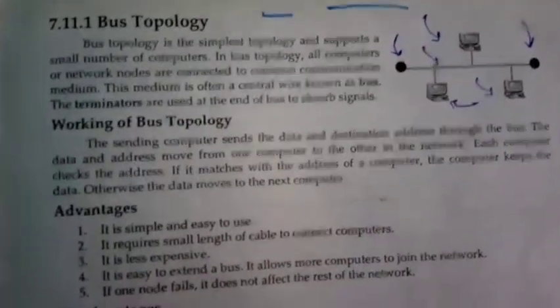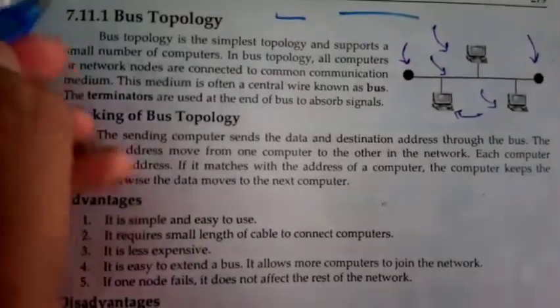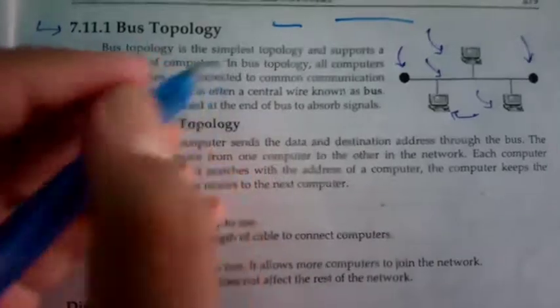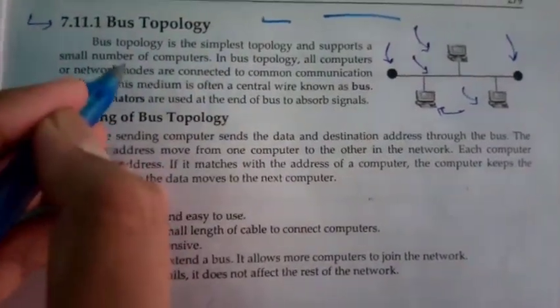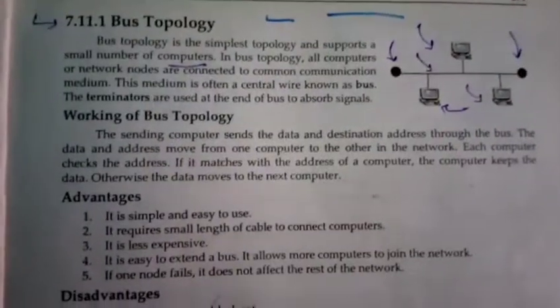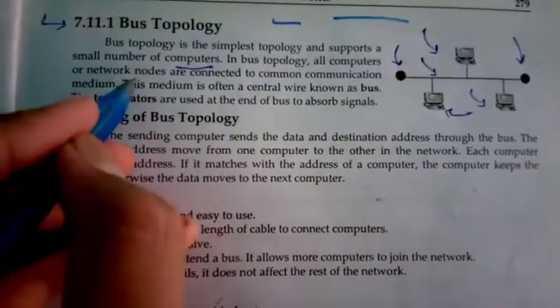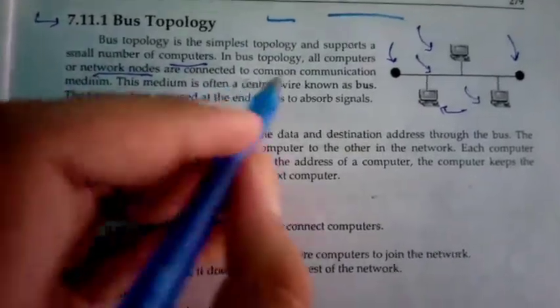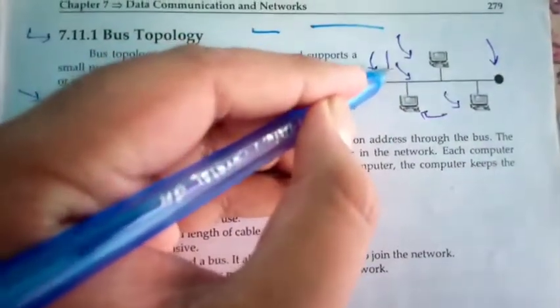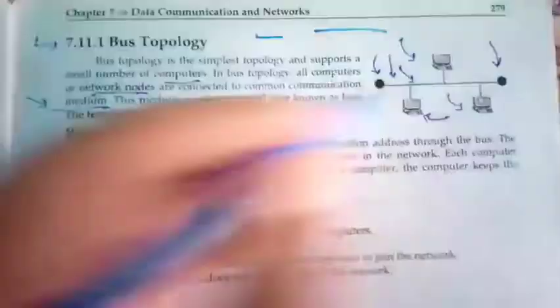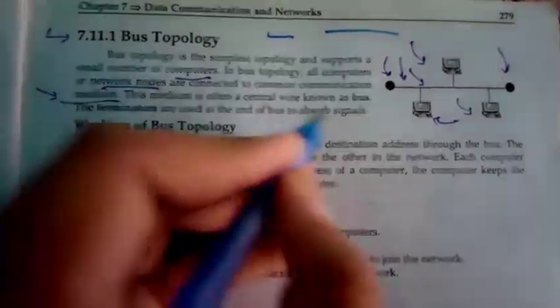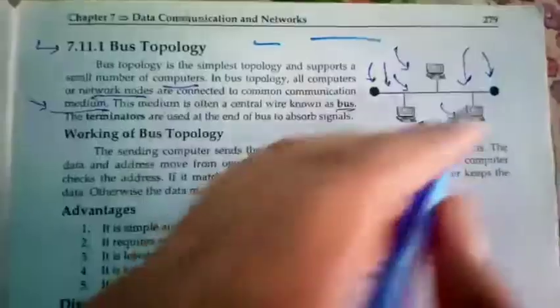device to another. Bus topology is the simplest topology and supports a small number of computers. In bus topology, all computers or network nodes are connected to a common communication medium. This medium is often a central wire known as a bus.